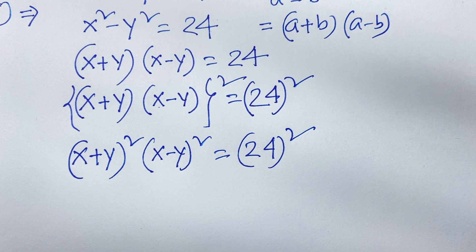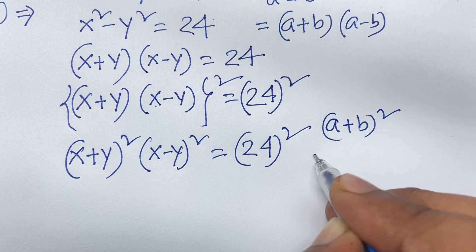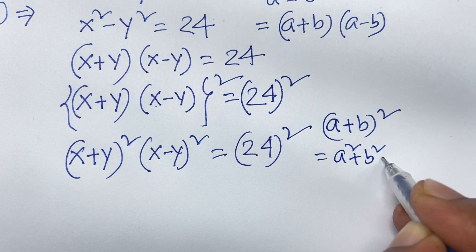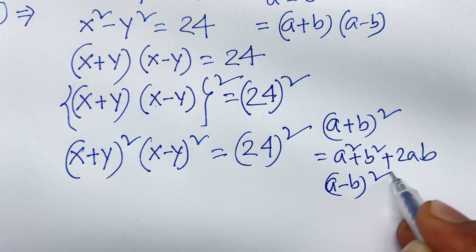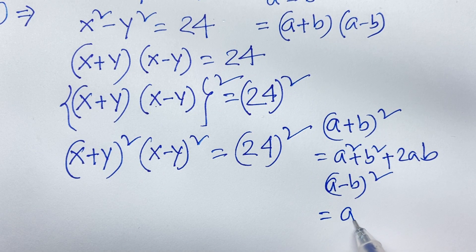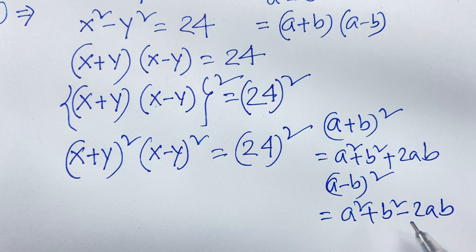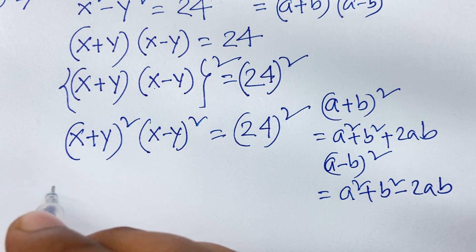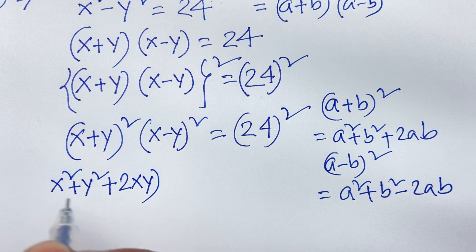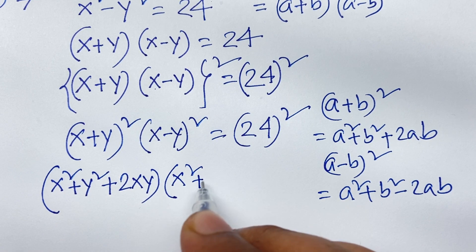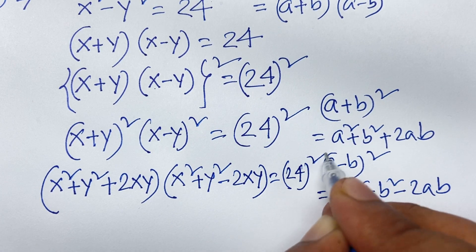Now, according to algebra rules, we know that (a plus b) whole square equals a squared plus b squared plus 2ab, and the other formula: (a minus b) whole square equals a squared plus b squared minus 2ab. Now I apply both rules in this case, so we find (x squared plus y squared plus 2xy) times (x squared plus y squared minus 2xy) equals 24 squared.